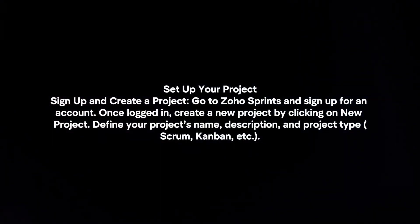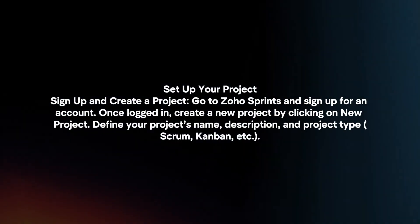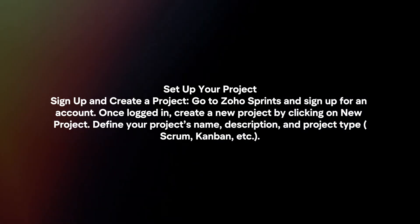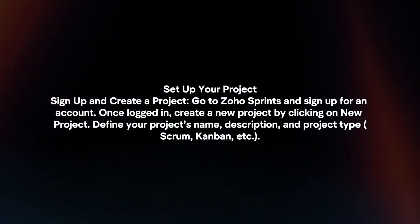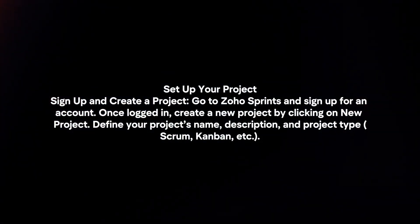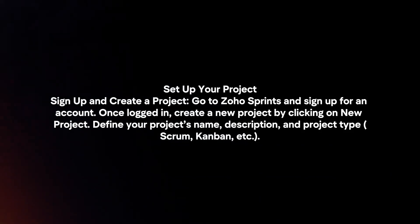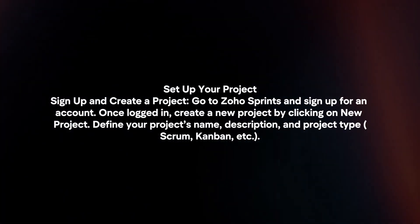Set up your project. Sign up and create a project by going to Zoho Sprints and signing up for an account. Once logged in, create a new project by clicking on New Project, then define your project's name, description, and project type.